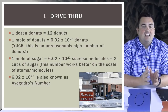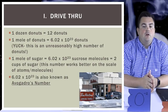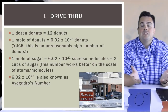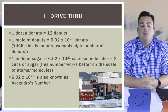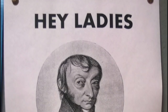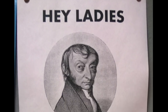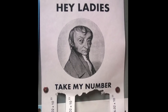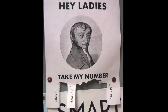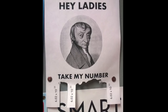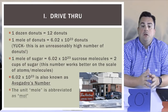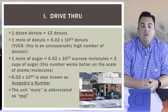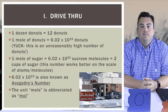6.02 times 10 to the 23rd is also known as Avogadro's number. Hey, I just met you, and this is crazy, but here's my number — so call me maybe. The unit mole is abbreviated MOL.